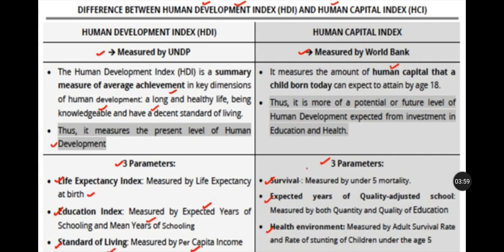The three parameters of HCI are: first, under-5 mortality rate; second, expected years of quality-adjusted schooling — combining school quality and quantity; and third, the health environment — measured by adult survival rate and the rate of stunting in children under the age of 5.